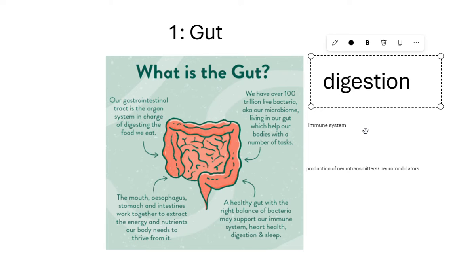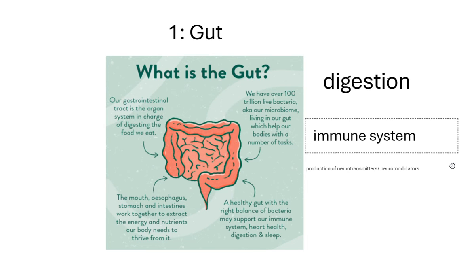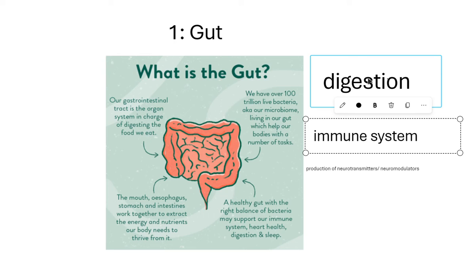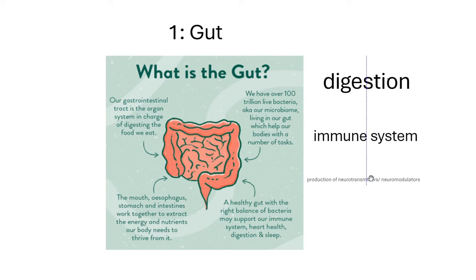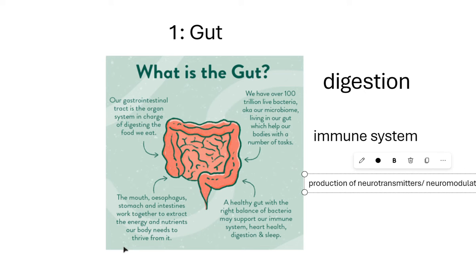The gut synthesizes key proteins that we extract from our food. A second function of our gut that we don't think about as much, but it's kind of intuitive, is our gut's role in our immune response and regulating our immune system to keep us physically healthy. But what we really want to focus on here in terms of the GBA axis is the role of the gut in producing key neurotransmitters and neuromodulators that regulate our mental health.